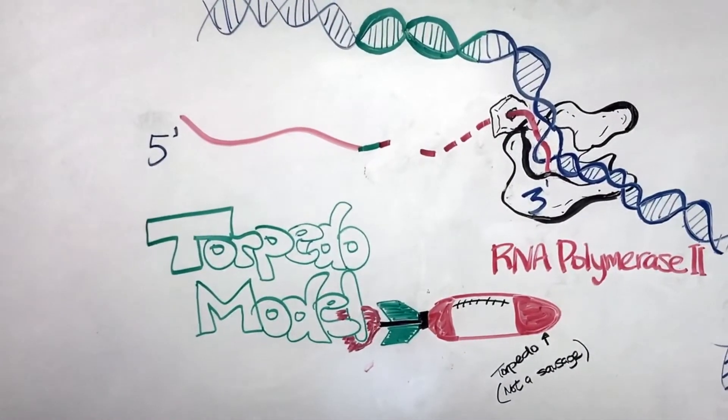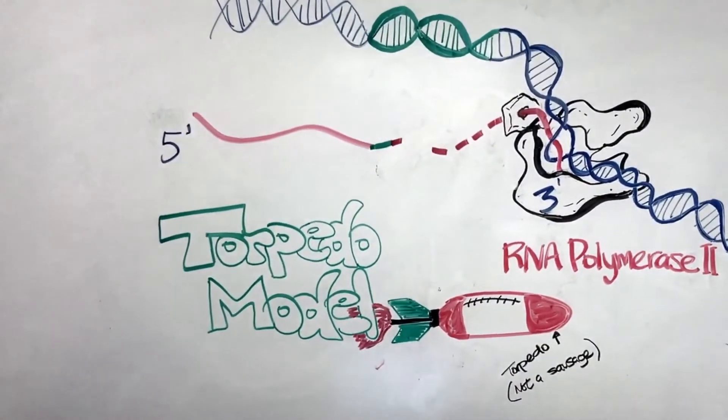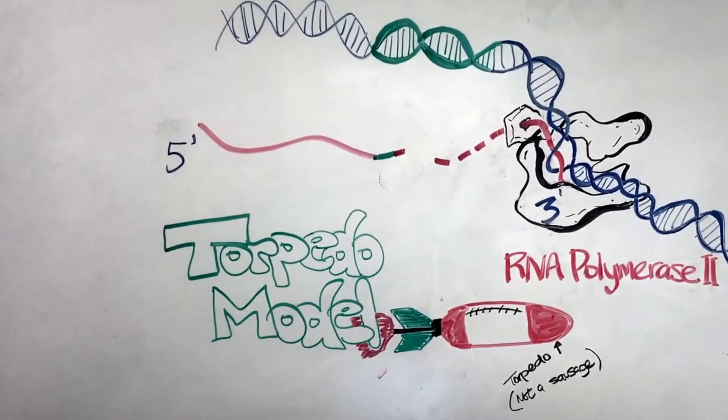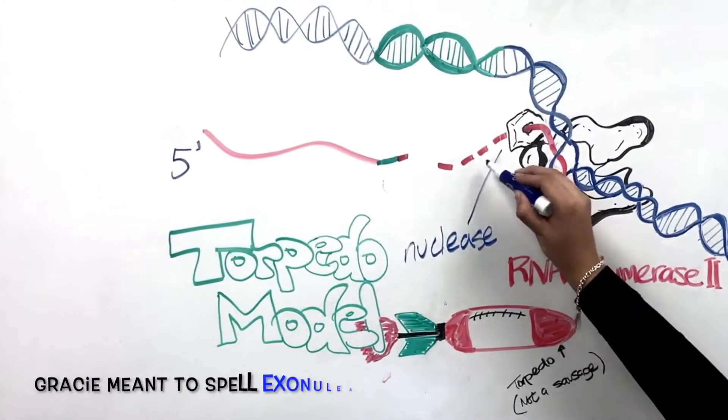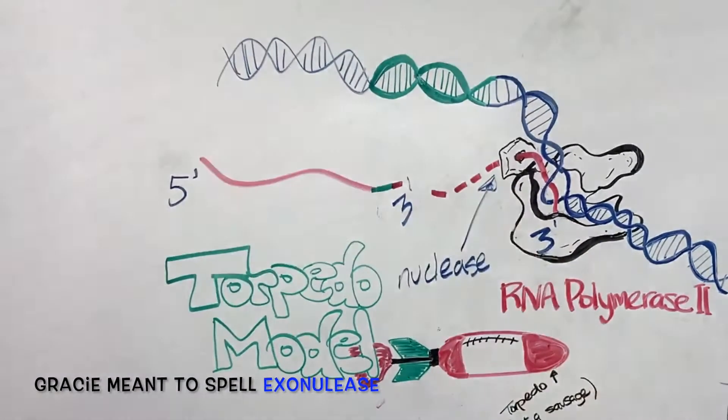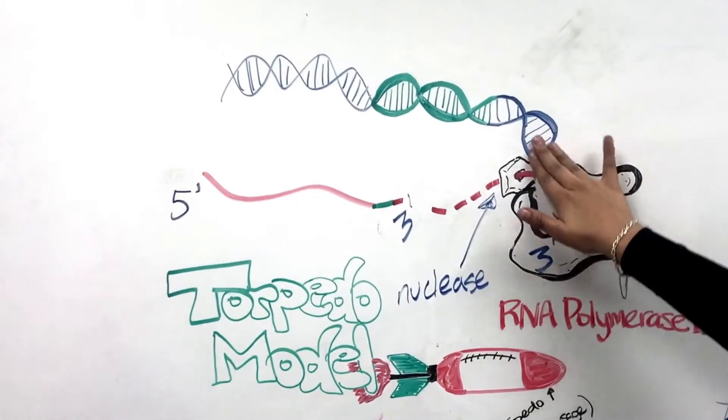There are two models that have been proposed for transcriptional termination. The first one is called the torpedo model, which suggests that RNA polymerase 2 is physically removed from the DNA strand. According to this model, the region of RNA that is still being transcribed and downstream from the poly-A signal sequence is cleaved by an exonuclease,